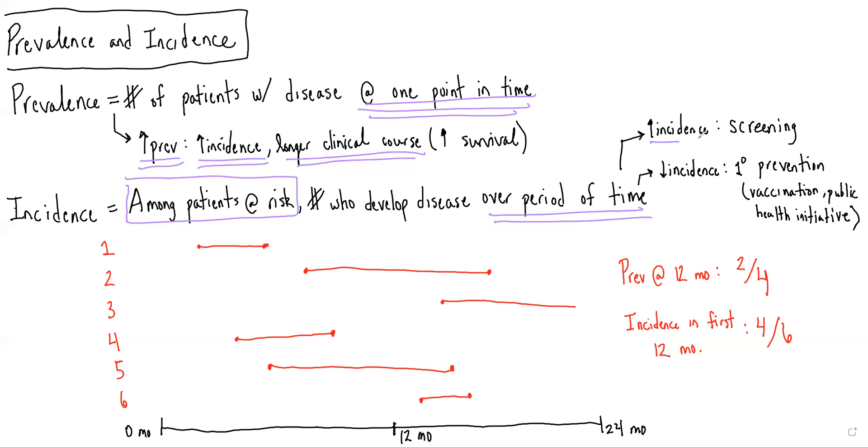Things that can increase the incidence of disease are screening campaigns, because screening campaigns are meant to detect new cases of disease. While it will primarily detect early cases of disease that don't have a significant morbidity, it nonetheless will increase incidence. Things that will decrease incidence are primarily forms of primary prevention, such as vaccination campaigns or public health initiatives that prevent individuals from getting the disease in the first place.